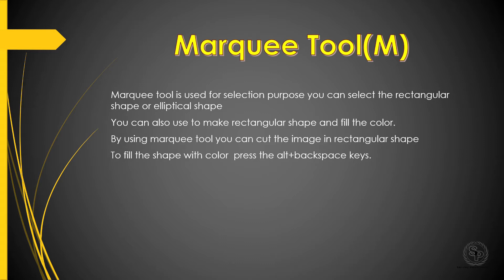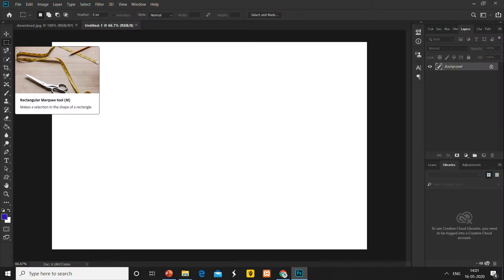You can cut the image in a rectangular shape or fill the shape with color. To fill the color in a rectangular shape that you make over the image, press Alt plus Backspace key.